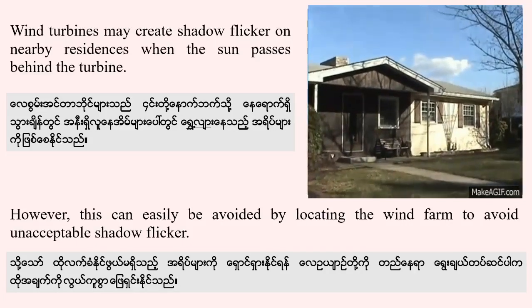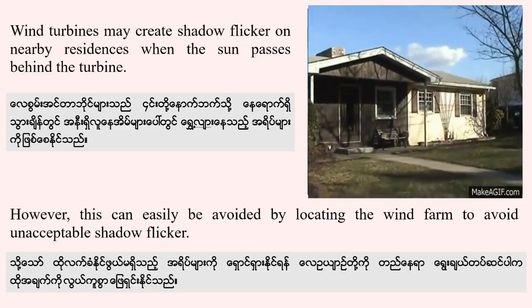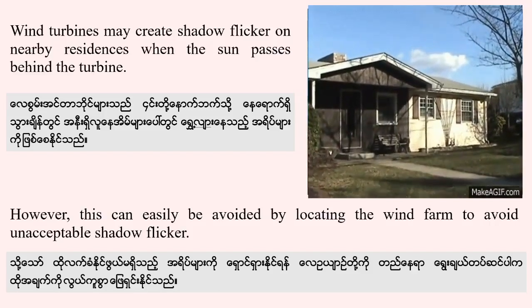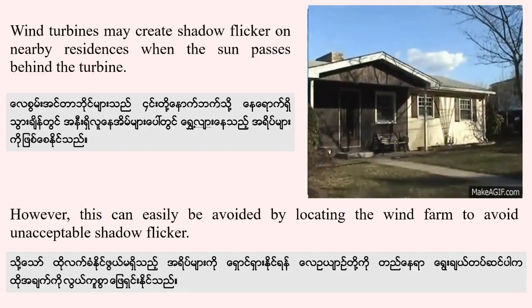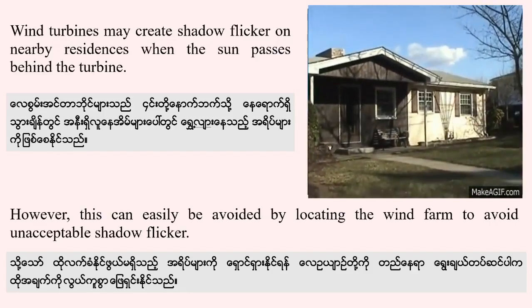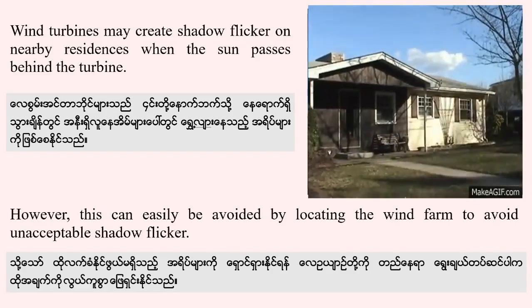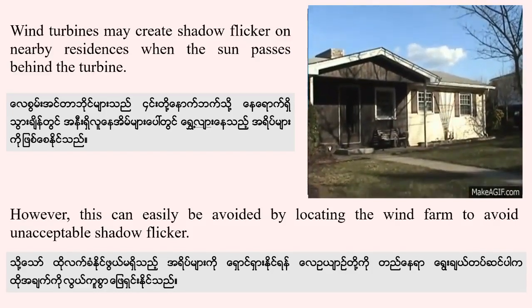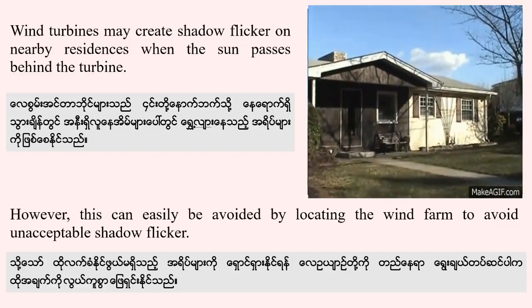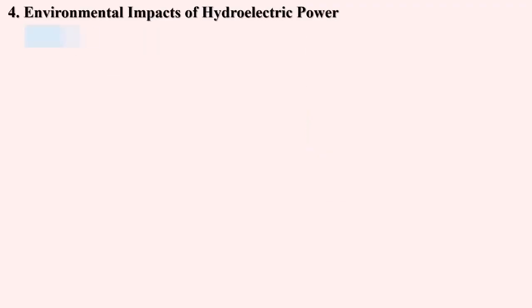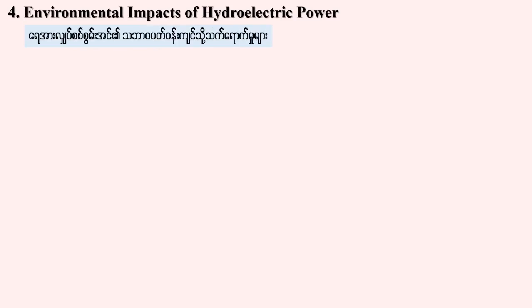We can see the environmental impacts of wind power and channel energy sources. Now we will see environmental impacts of hydroelectric power. Those are the sources of energy and environmental impacts of hydroelectric power.